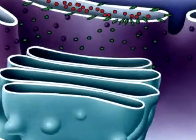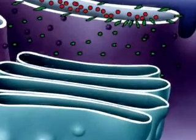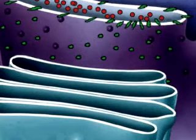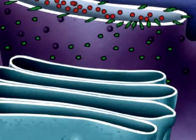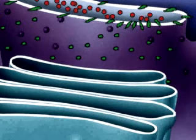Proteins move from the endoplasmic reticulum to the Golgi apparatus. Soluble proteins are carried inside vesicles, and membrane-bound proteins are carried in their membranes.